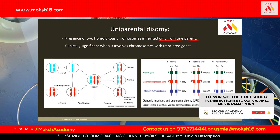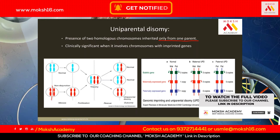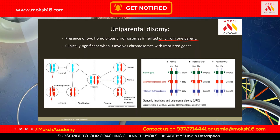Okay, let's see that. Normally, what happens in meiosis is there is separation of the homologous chromosomes and then separation of the sister chromatids.